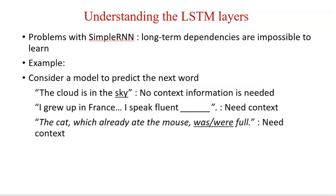Take another example: 'The cat, which already ate the mouse, dash dash full.' In the blank, we have to place either 'was' or 'were,' but that depends on the first part of the sentence — 'the cat.' Because we used 'the cat,' we have to use 'was' in the blank space. We need context here, so LSTM works better in such cases.